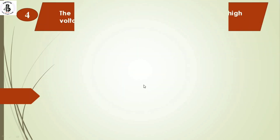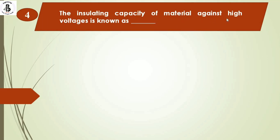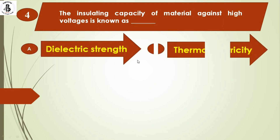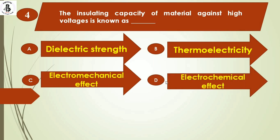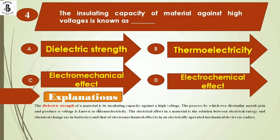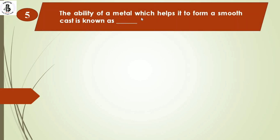The next question: the insulating capacity of a material against high voltage is known as option A) dielectric strength, option B) thermoelectricity, option C) electromechanical effect, option D) electrochemical effect. Dielectric strength is the insulating capacity against high voltage. Thermoelectricity is when two dissimilar metals join and produce a voltage. Electrochemical effect relates electrical energy to chemical change, and electromechanical effect is used in radar mechanisms. The right answer is option A, dielectric strength.